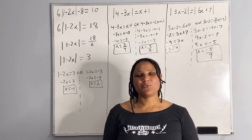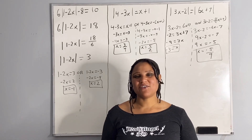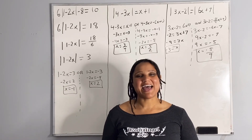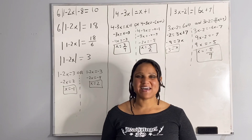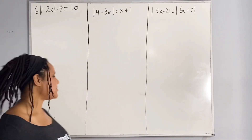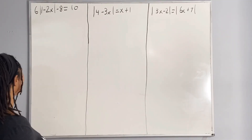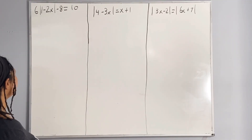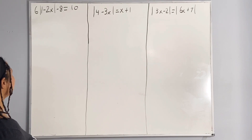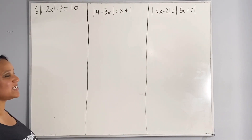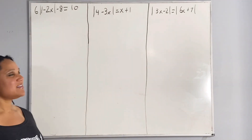In this video, we are going to solve an equation when given an absolute value. Let's take a look at our first problem. We have 6 times the absolute value of 1 minus 2x, minus 8, is equal to 10.